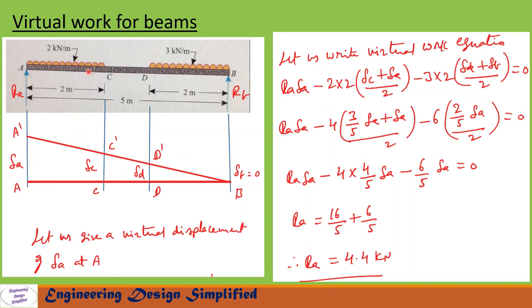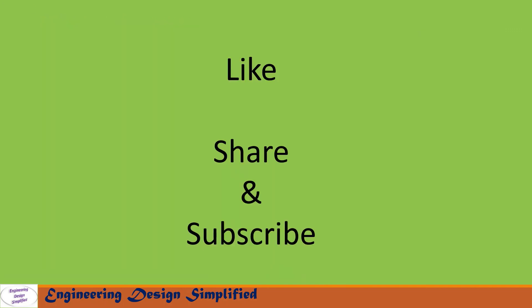The total load for the first UDL is 2×2 with average displacement (δA + δC)/2, and for the second UDL is 3×2 with average displacement (δD + δB)/2. Substituting δC and δD in terms of δA and simplifying gives R_A = 4.4 kN. That's all for today's video — if you like this content please like, share, and subscribe. Thanks for watching.